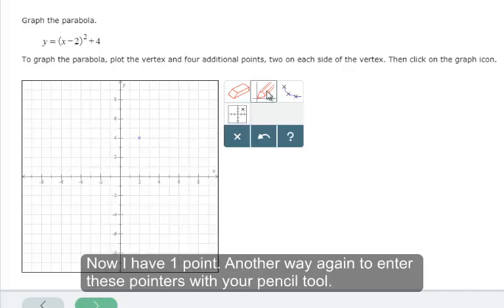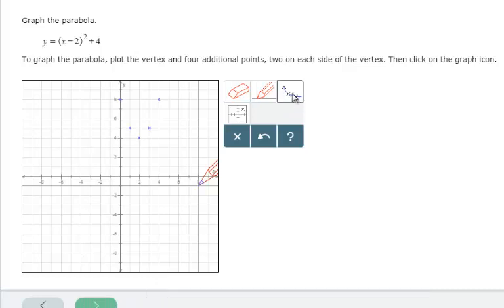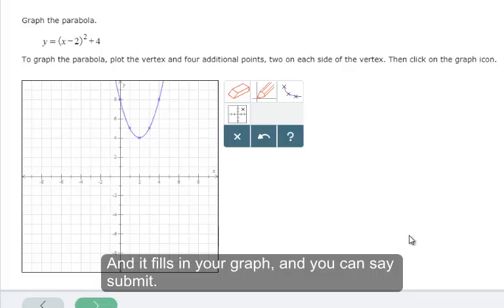Now I have one point. Another way again to enter these points is with your pencil tool. After you have the five points that are required, you click this. I call it the connect the dots tool. And it fills in your graph and you can say submit.